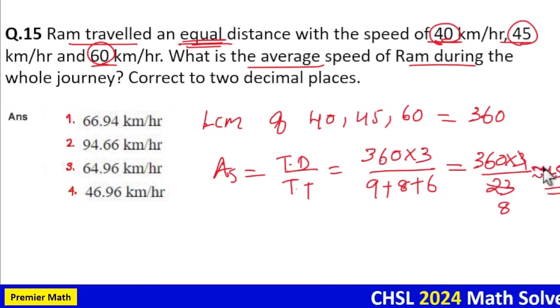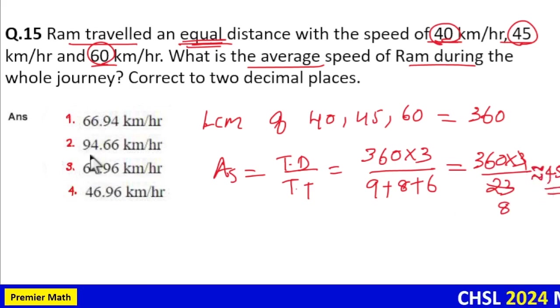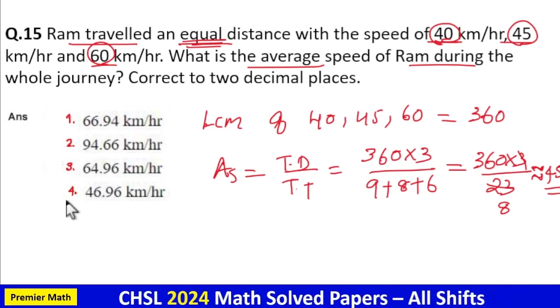So this is around 45, around 45 because we have here too much difference between the options, so option 4 is your answer. Your answer is 46.96.